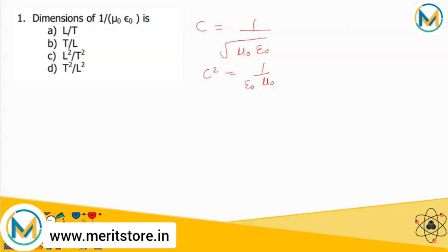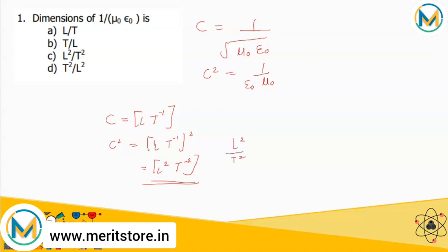Since the dimension of c is [LT⁻¹], the dimension of c² will be [LT⁻¹]², which works out to L²T⁻². Looking at the options, this can be written as L² upon T², which corresponds to option C.